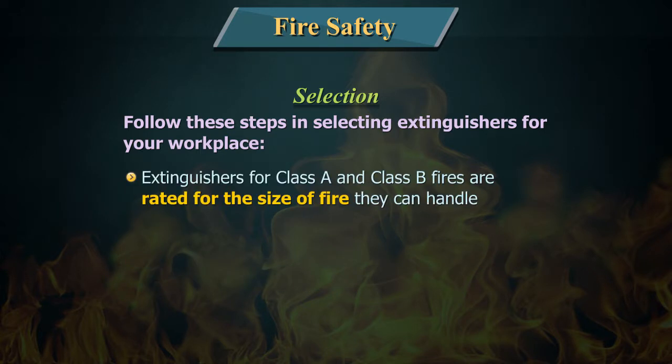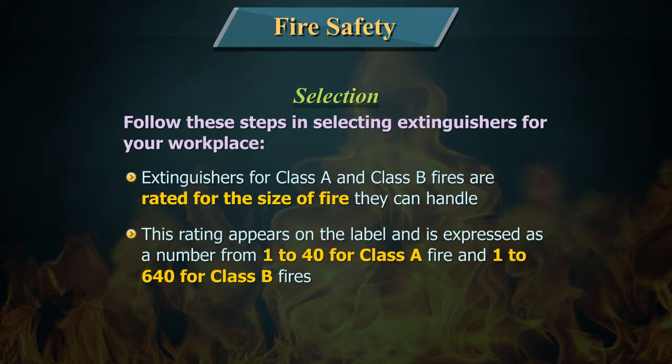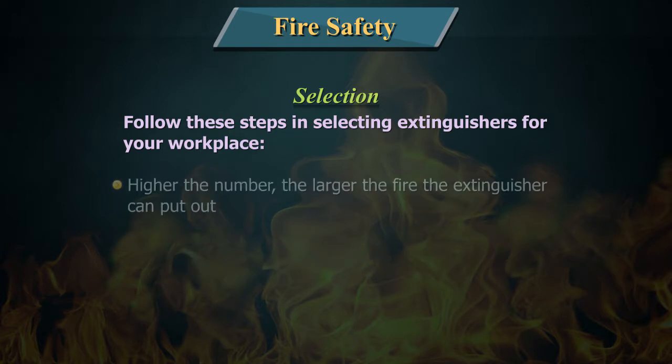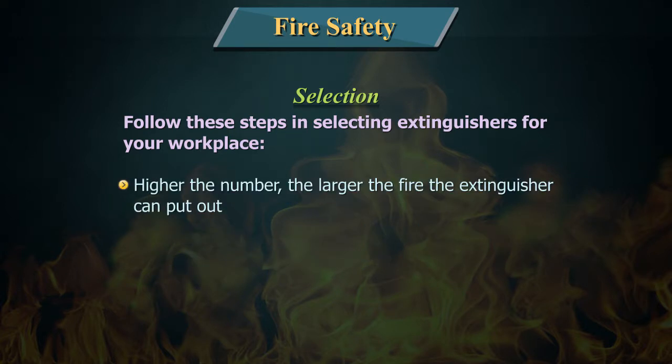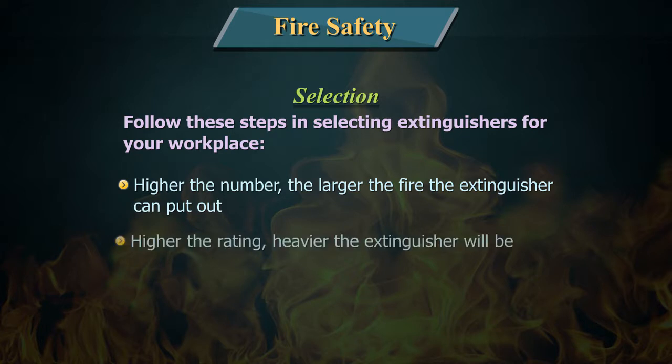Extinguishers for Class A and Class B fires are rated for the size of fire they can handle. This rating appears on the label and is expressed as a number from 1 to 40 for Class A fires and 1 to 640 for Class B fires. The higher the number, the larger the fire the extinguisher can put out. However, the higher the rating, the heavier the extinguisher will be.